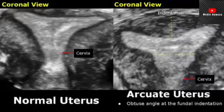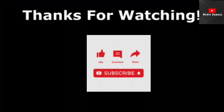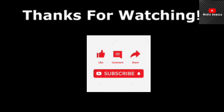An arcuate uterus has very little association with reproductive failure. Thank you so much for watching — please subscribe and stay tuned for more imaging videos.